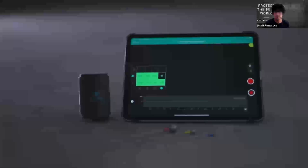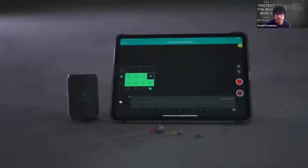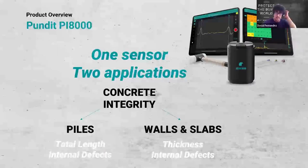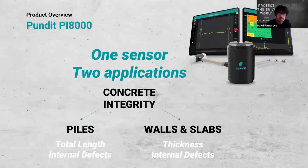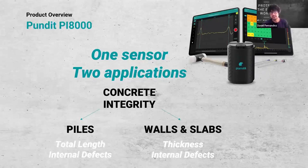Let's go to the product overview. With just one sensor, we have two different applications, both for the estimation of concrete integrity. On one side, we can test piles or foundation piles — estimating total pile length and detecting internal defects. On the other side, we can test walls and slabs to detect thickness and find internal defects.